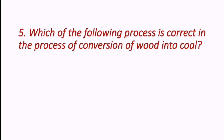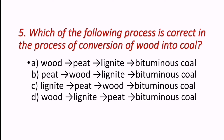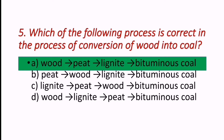Next question: which of the following is the correct process for the conversion of wood into coal? How does wood convert into coal? The correct sequence is: wood, then peat, then lignite, then bituminous coal. And further it can become anthracite coal as well.